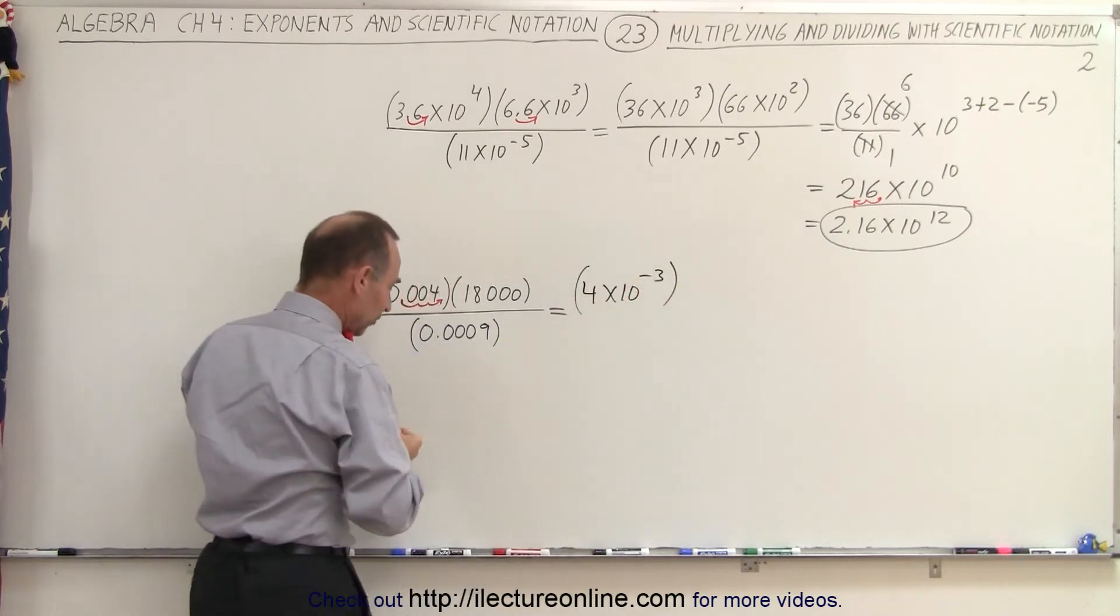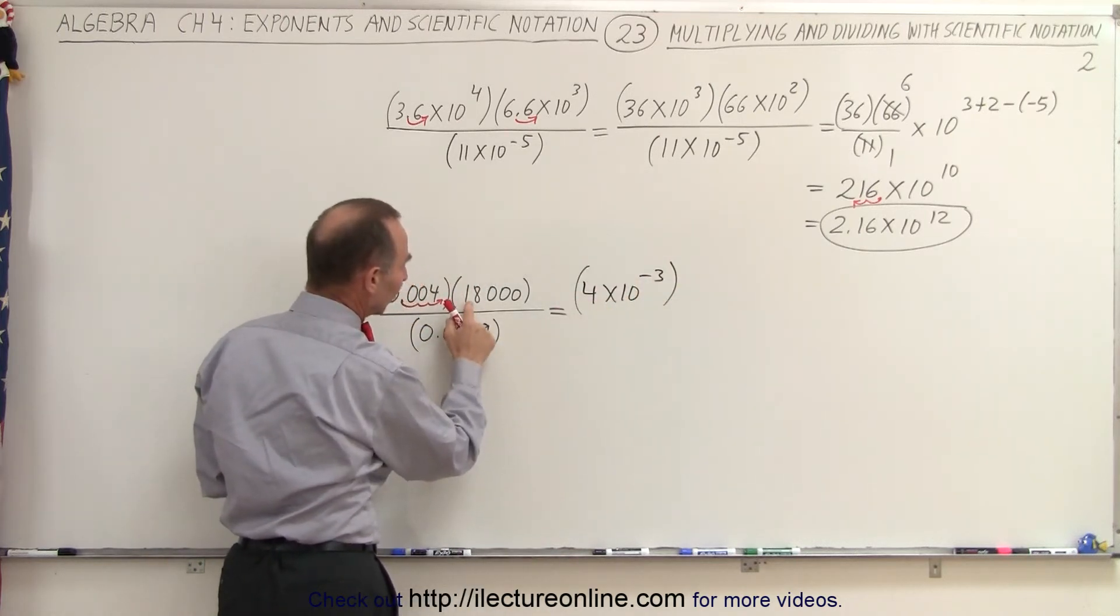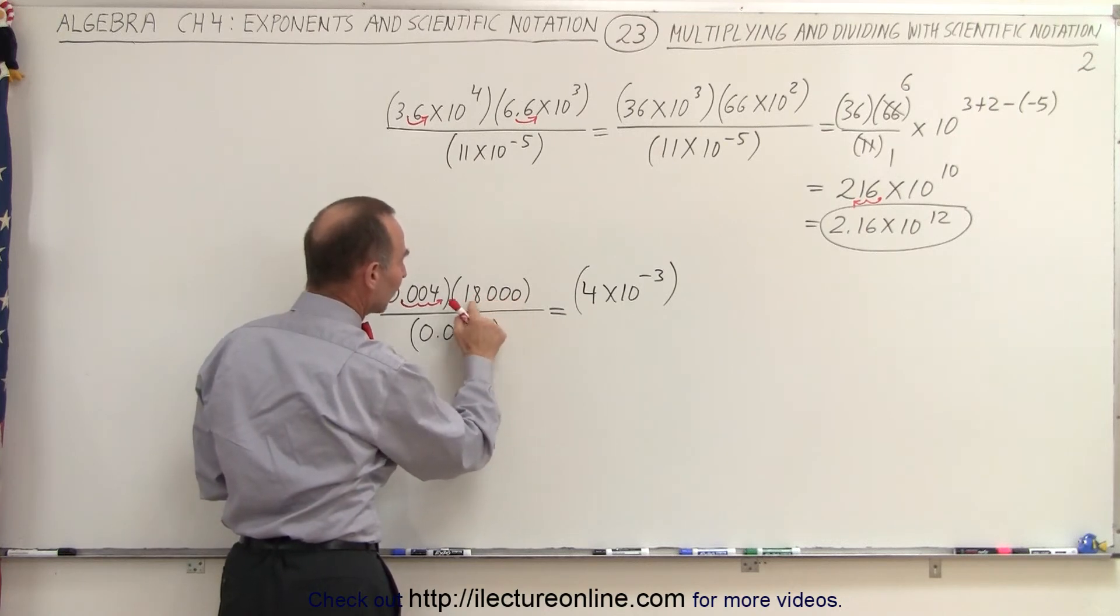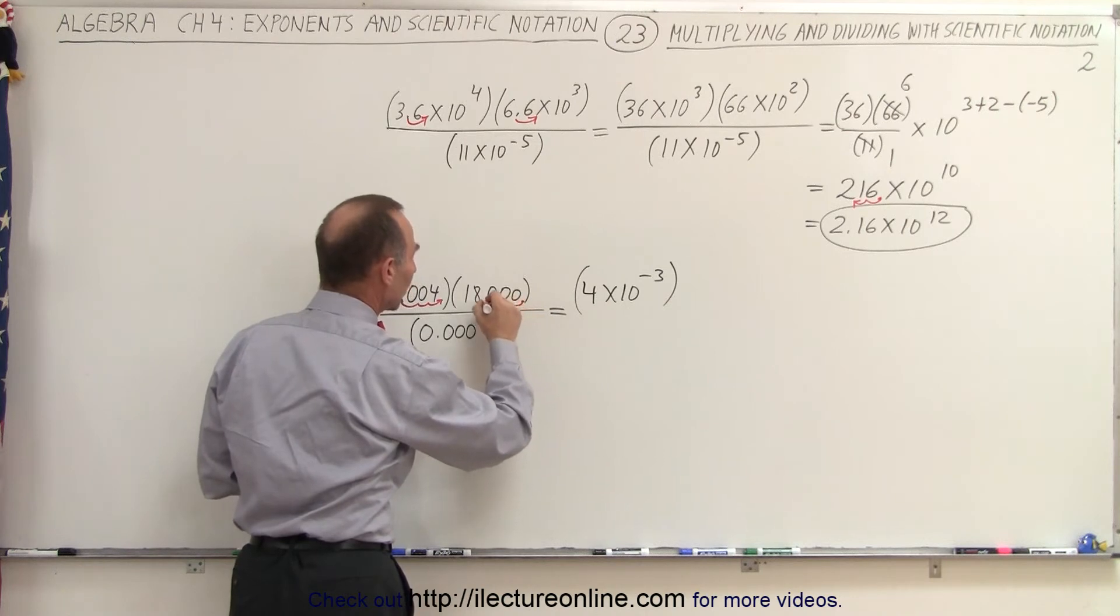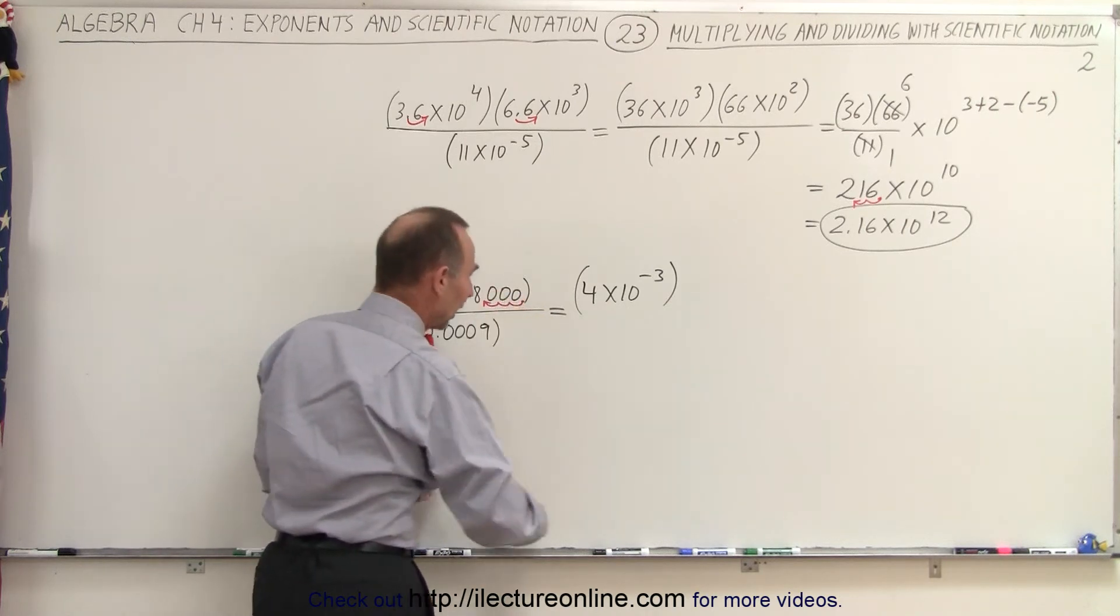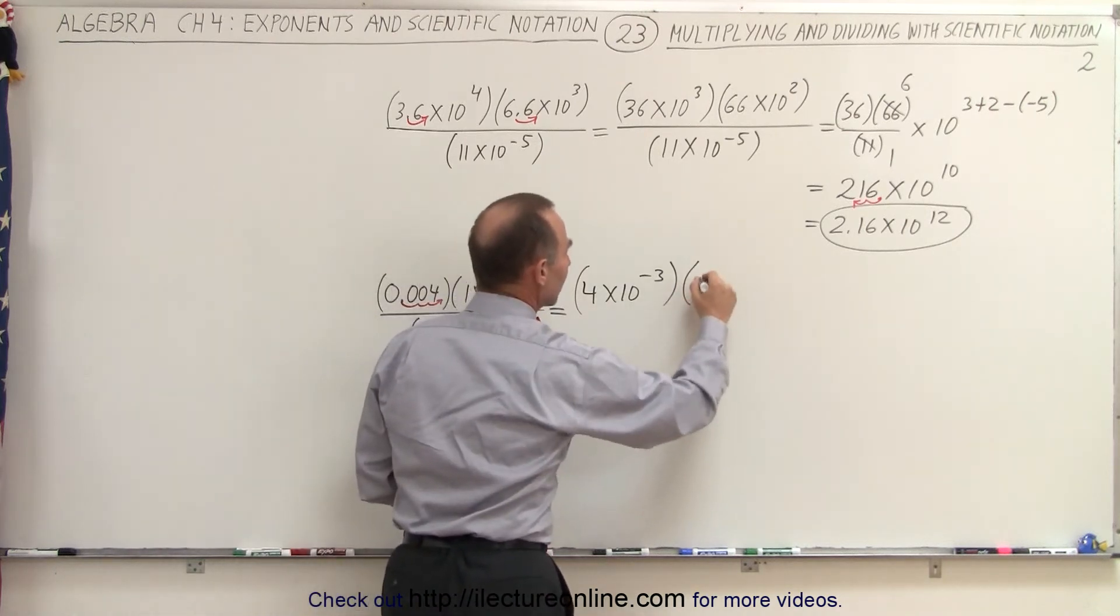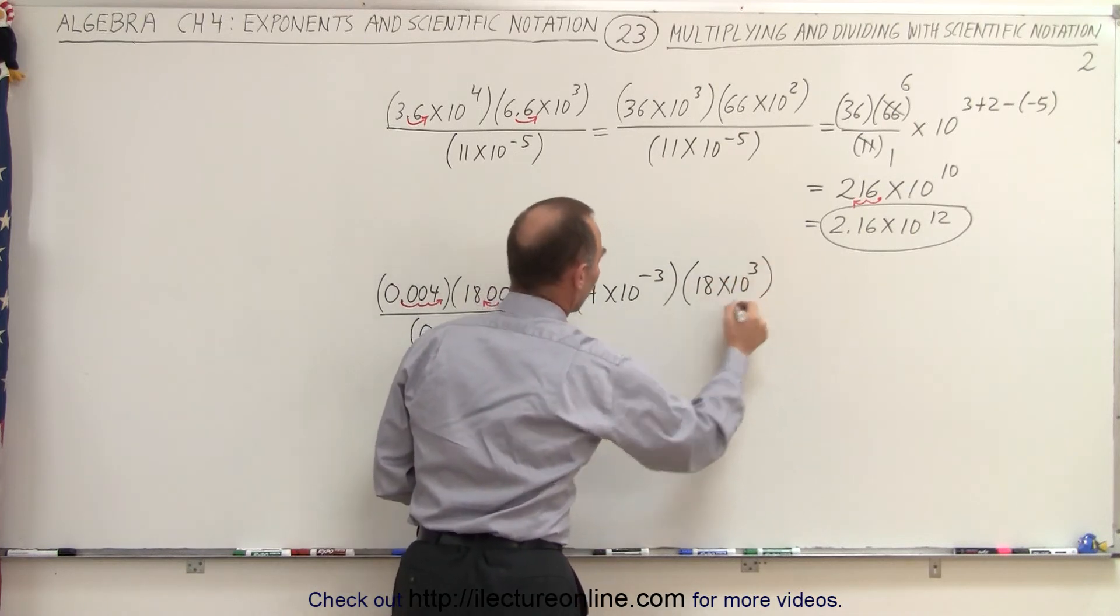And over here, instead of moving the decimal place over 4 places, starting from here to here, 1, 2, 3, 4, we're only going to move it over 3 places. 1, 2, 3, like this, and write this as 18 times 10 to the third power.